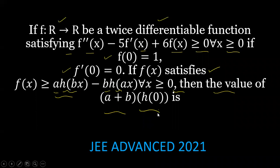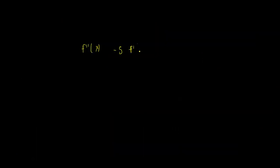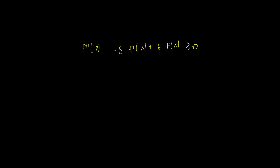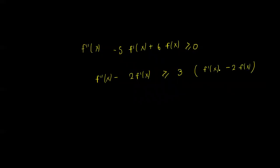We have the condition f''(x) minus 5 times f'(x) plus 6 times f(x) is greater than or equal to zero. I will rewrite this as: f''(x) minus 2 times f'(x) is greater than or equal to 3 times f'(x) minus 2 times f(x).